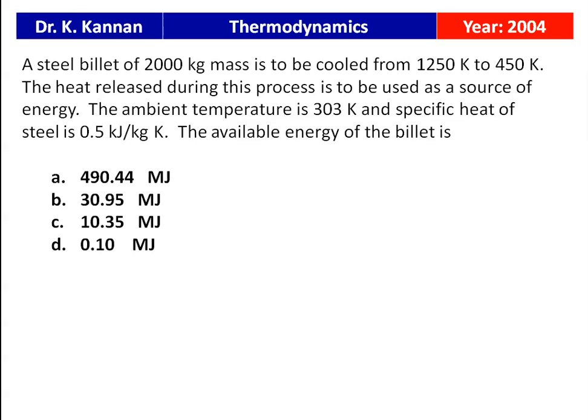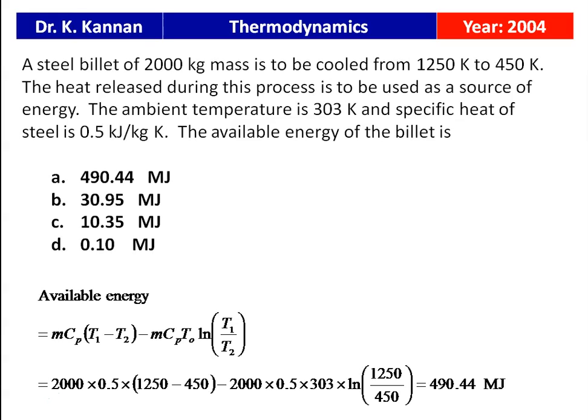From the 2004 question paper: a steel billet of 2000 kg is cooled from 1250 K to 450 K; ambient is 303 K, specific heat Cp = 0.5 kJ/kg·K. Available energy = MCp(T1 − T2) − MCp·T₀·ln(T1/T2) = 2000 × 0.5 × (1250 − 450) − 2000 × 0.5 × 303 × ln(1250/450) = 490.44 MJ. Answer: option A.